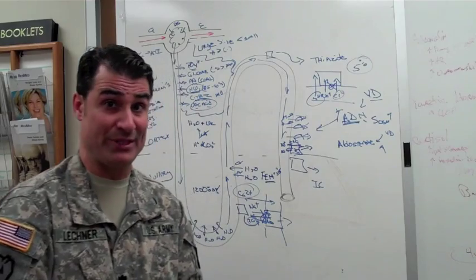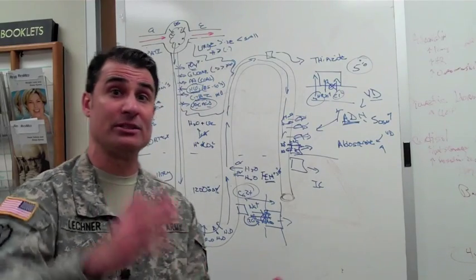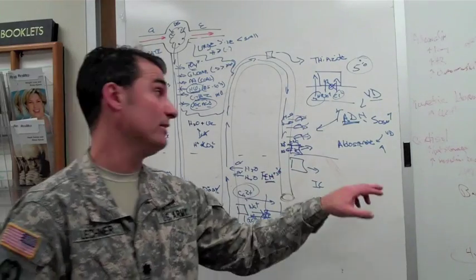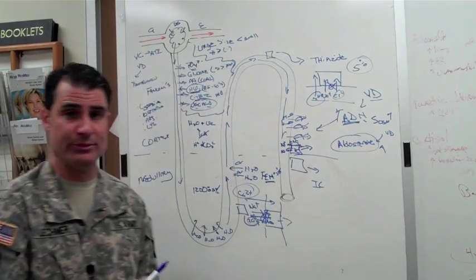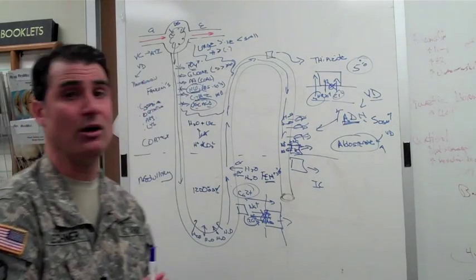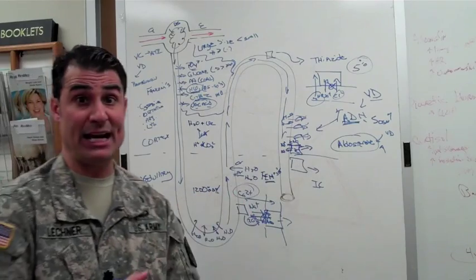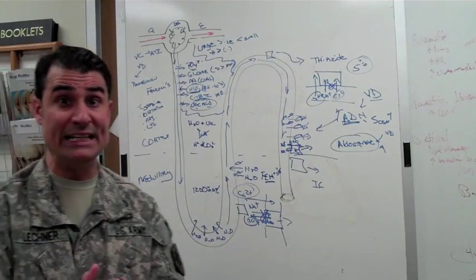which in turn tells the kidney, well actually aldosterone comes from the zona glomerulosa in the adrenal gland. It's going to kick out and say whoa, we need to hold, we can't hold on to that much potassium